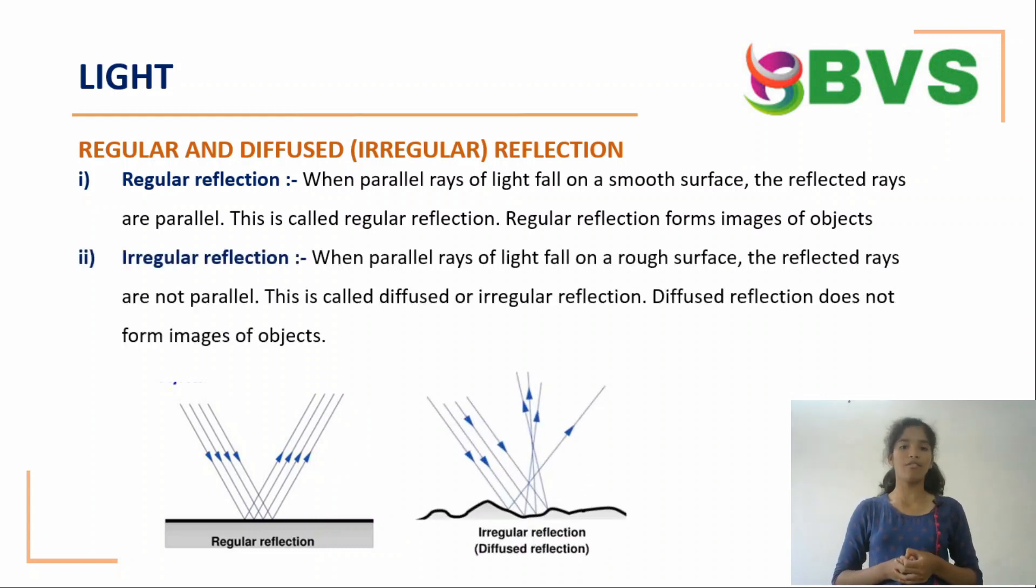Irregular reflection: When parallel rays of light fall on a rough surface, the reflected rays are not parallel. This is called diffused or irregular reflection. Diffused reflection does not form images of objects.